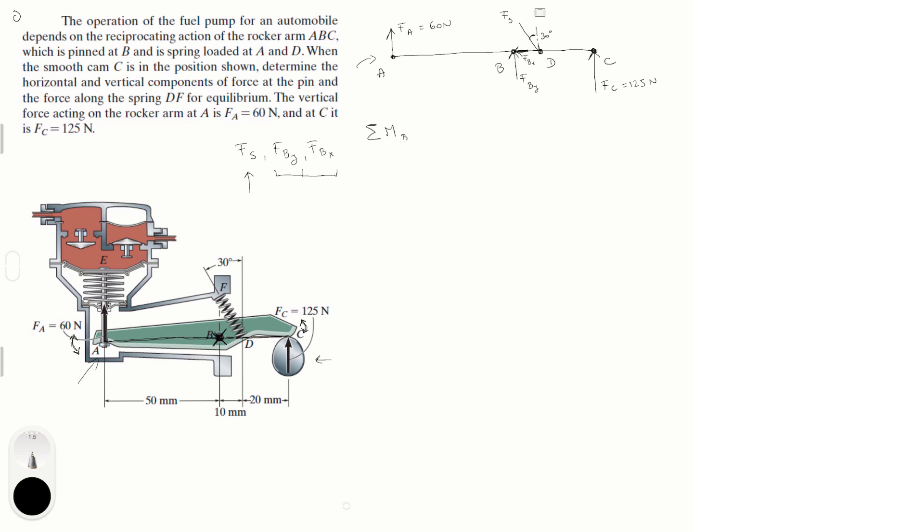Sum of the moments at B, assuming counterclockwise is positive, is equal to zero. And this is equal to minus F_A times the distance from A to B which is 0.05 meters. Now I'm converting millimeters to meters so this will be 0.05 meters. Don't get confused and do 0.5, that would be a mistake.